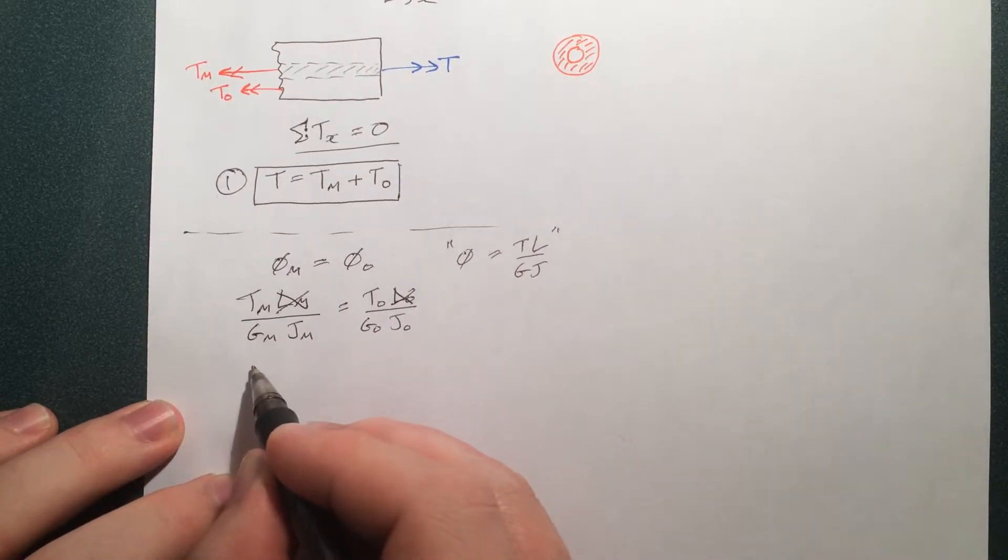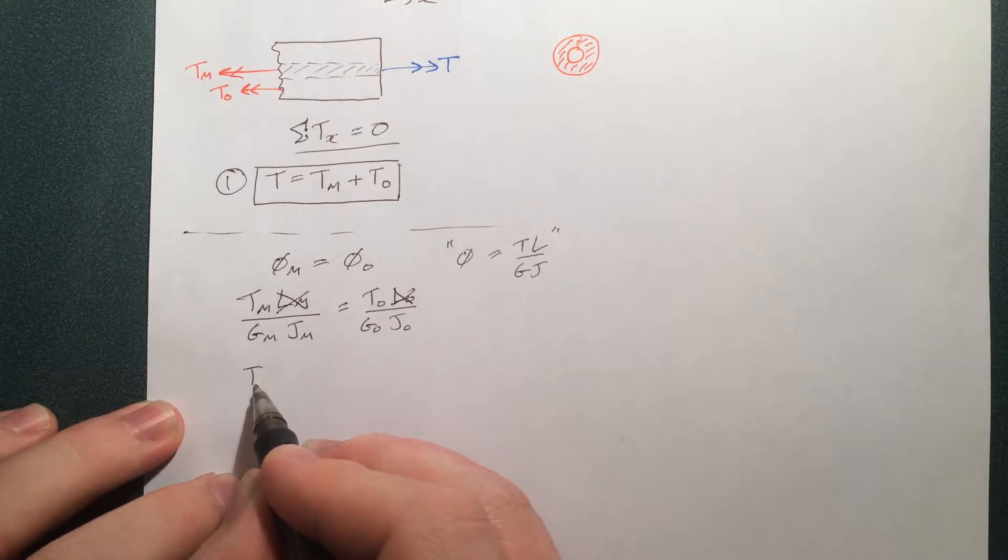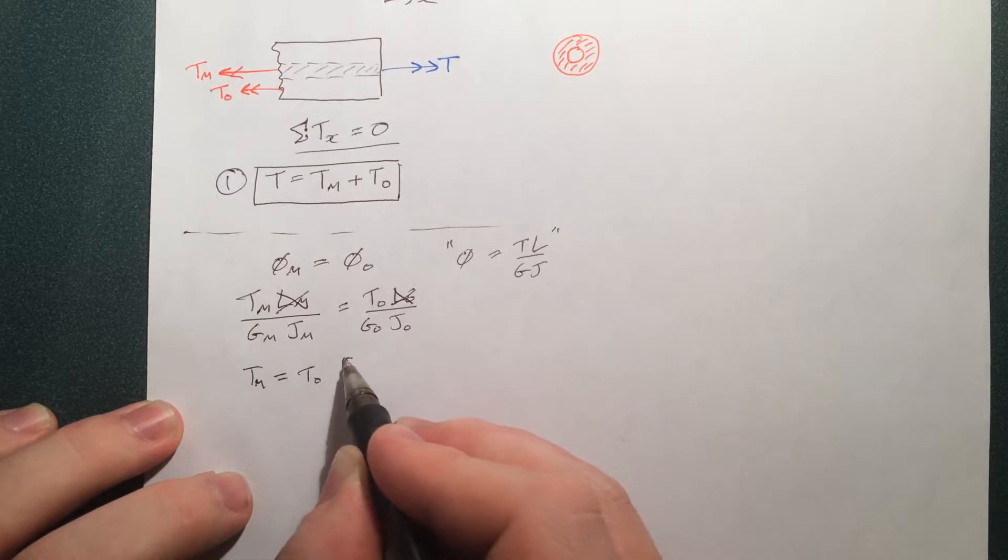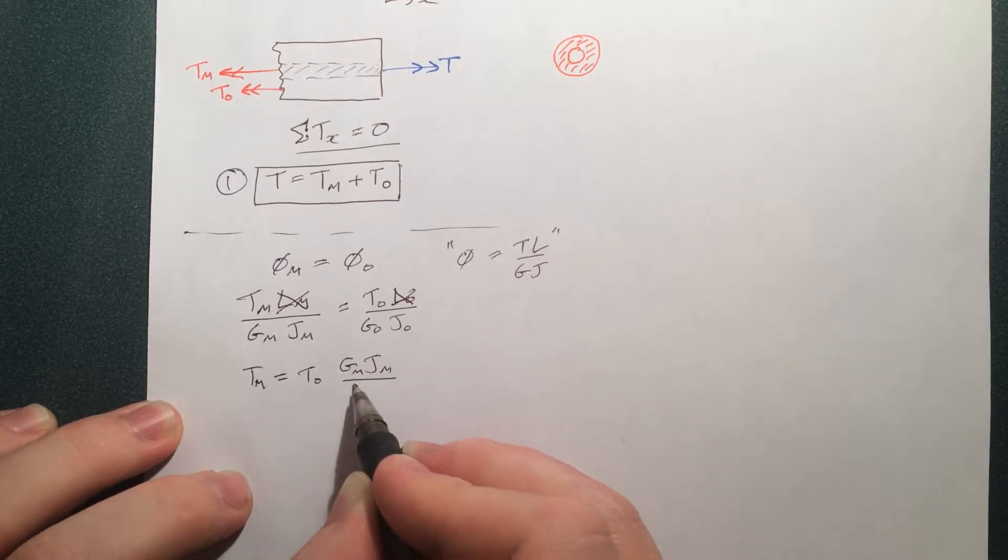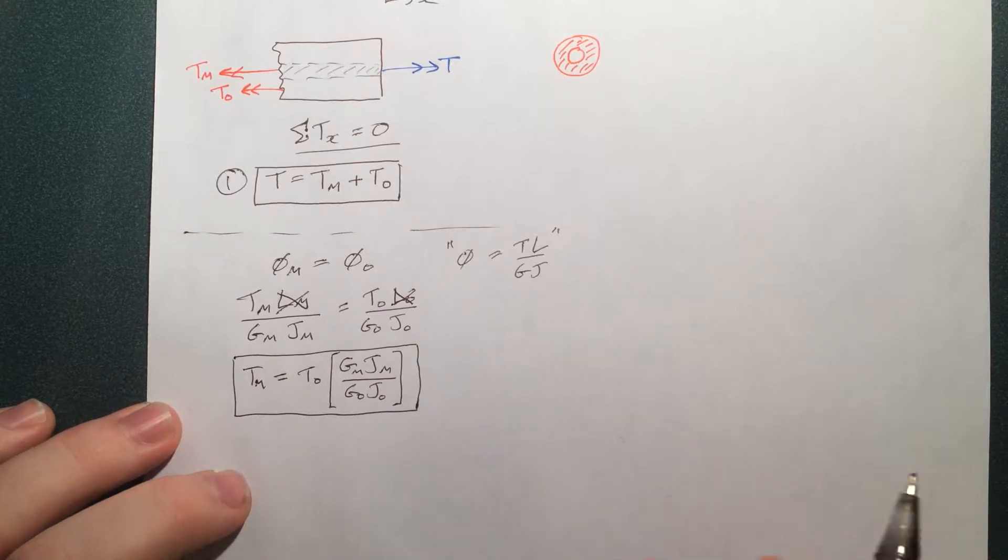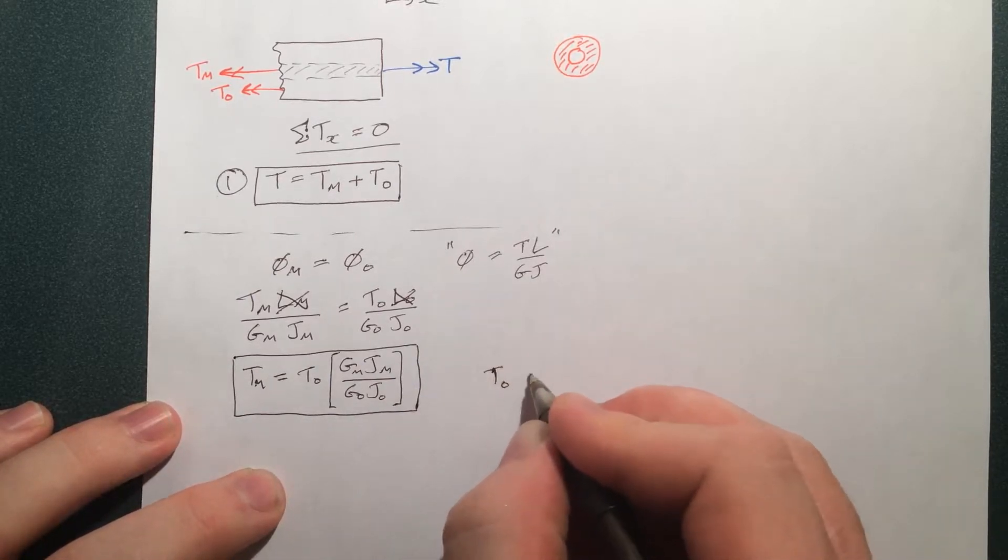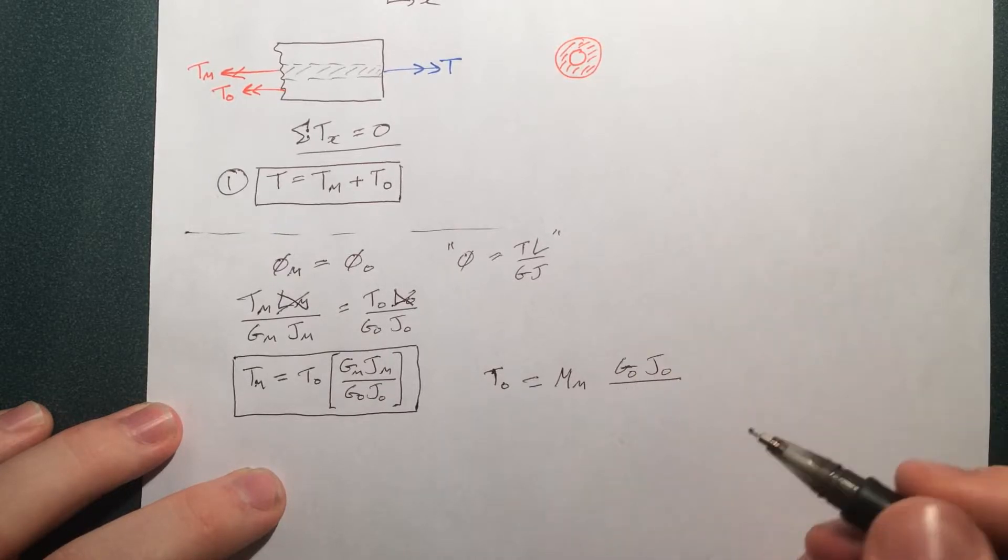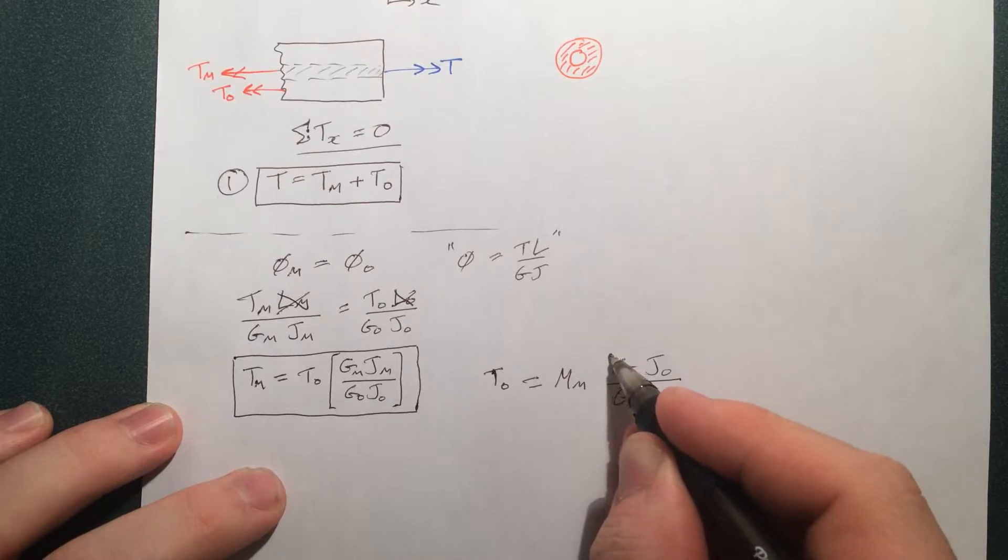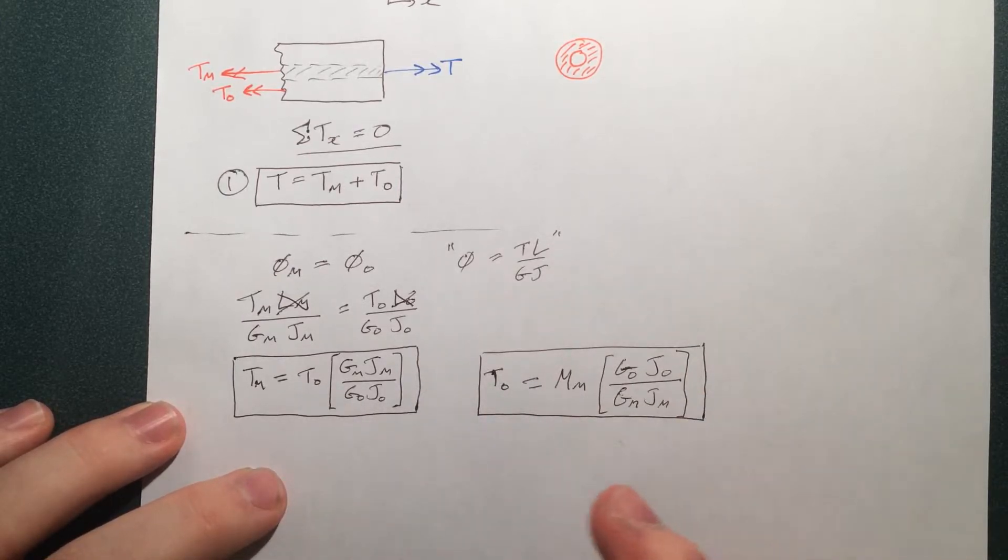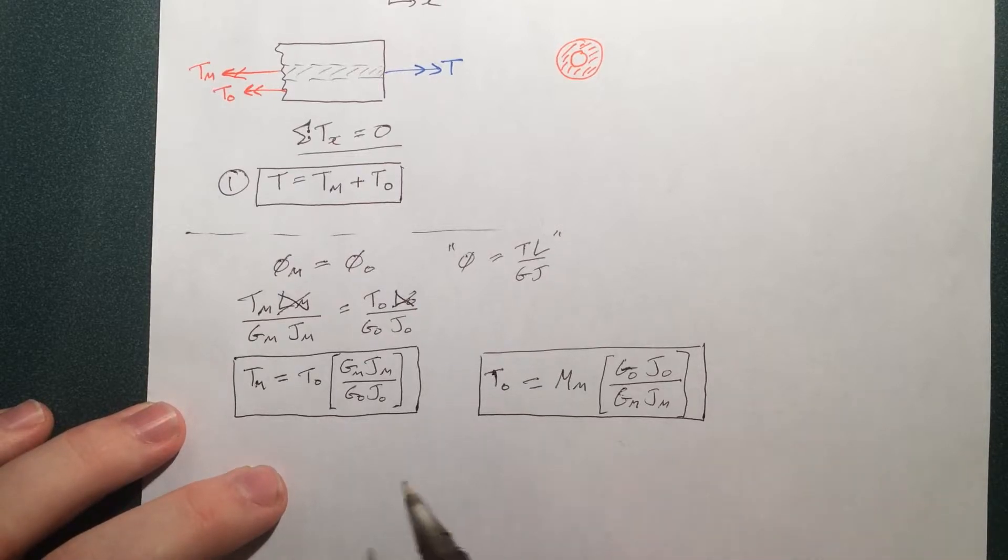And then we can write T_M in the middle, or rearranging it the other way, solving for the other variable. We can say the torque in the outside. So these are essentially the same expressions. I've just put T_M equal to something, and T in the outside equal to something. And this will help when we actually go and find the T_M as itself.